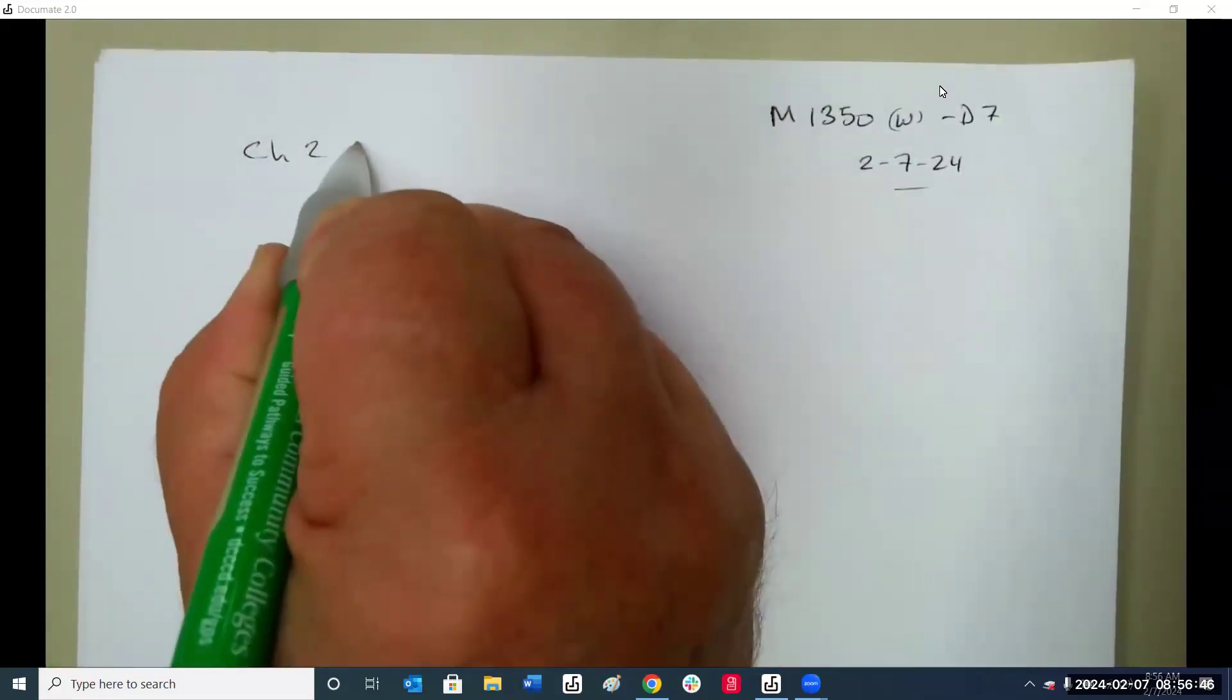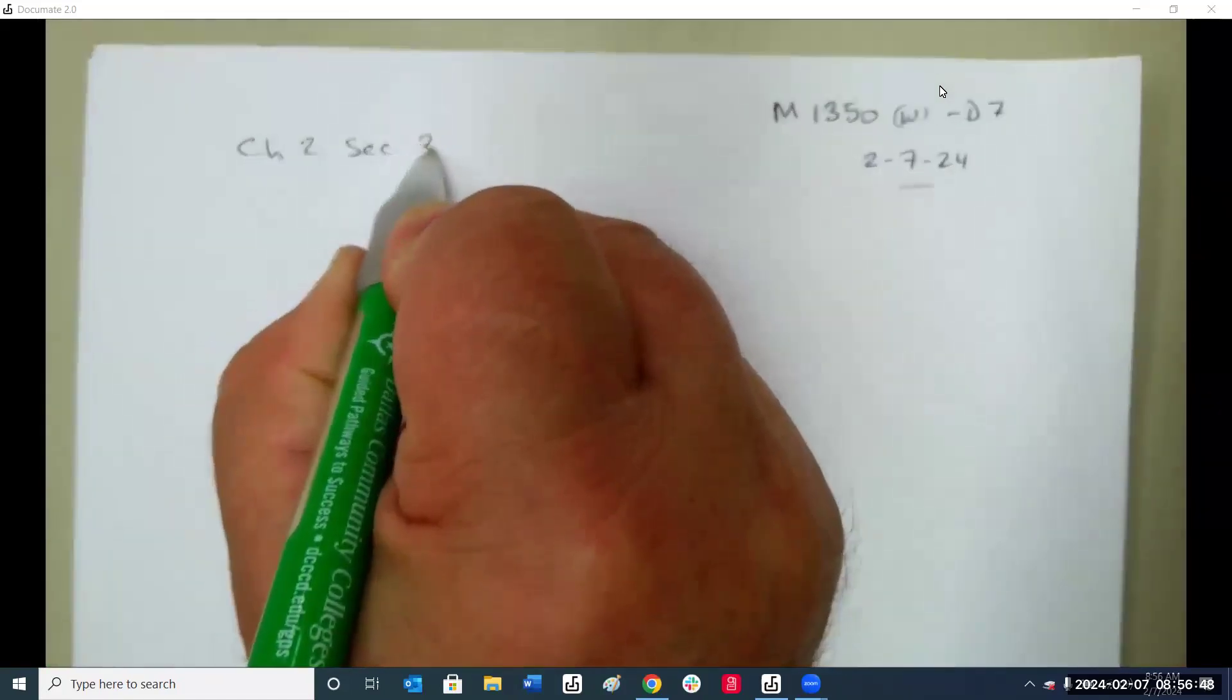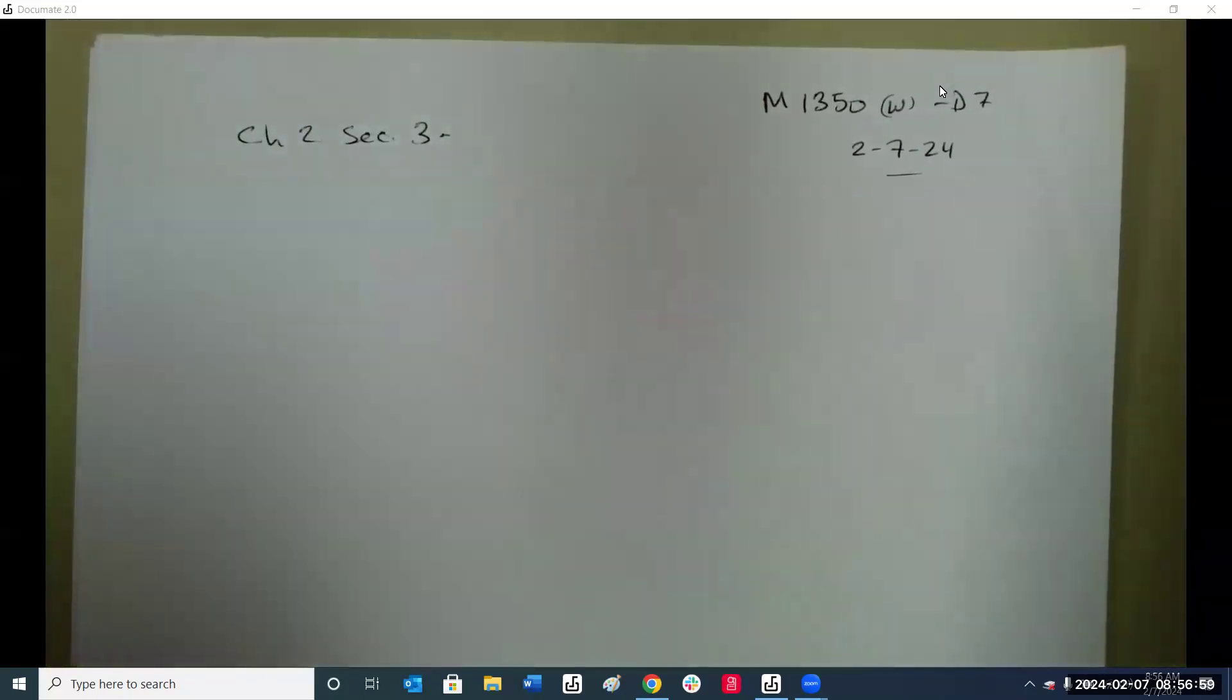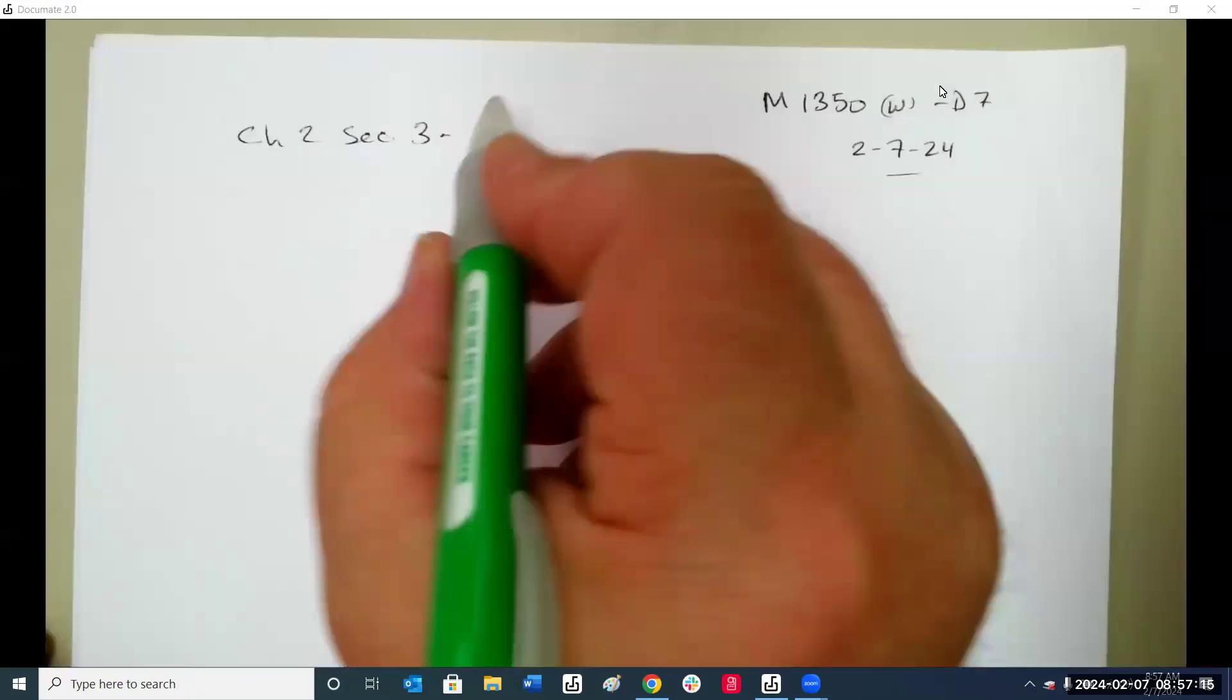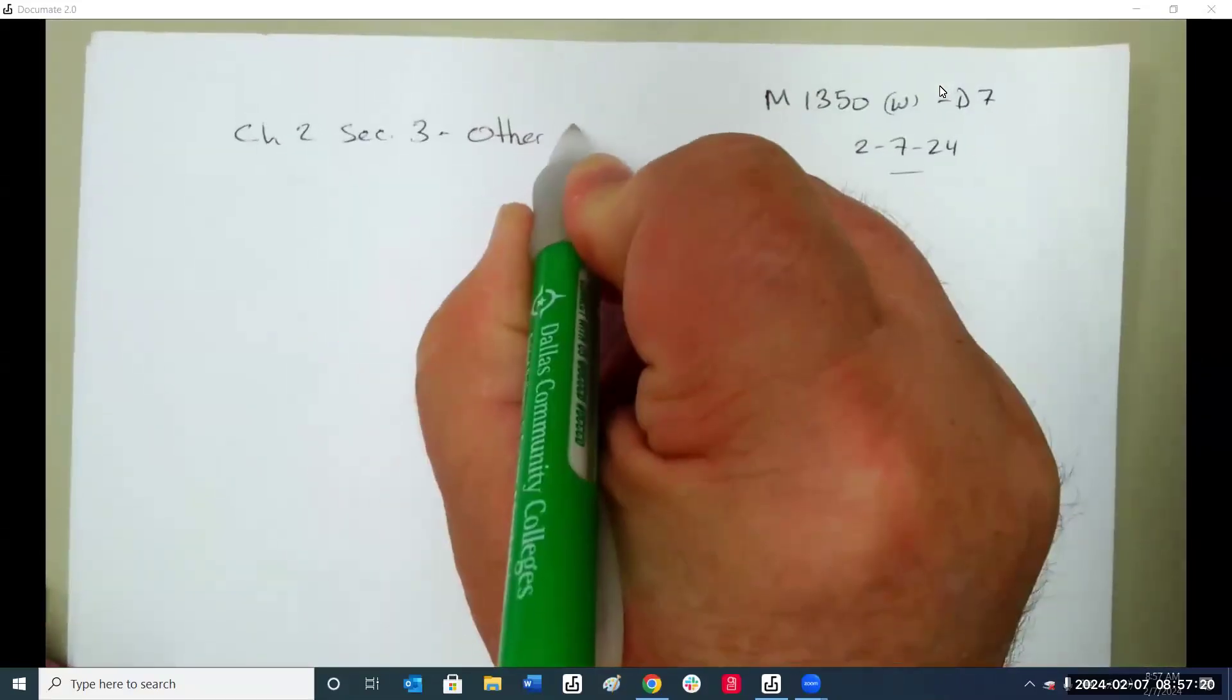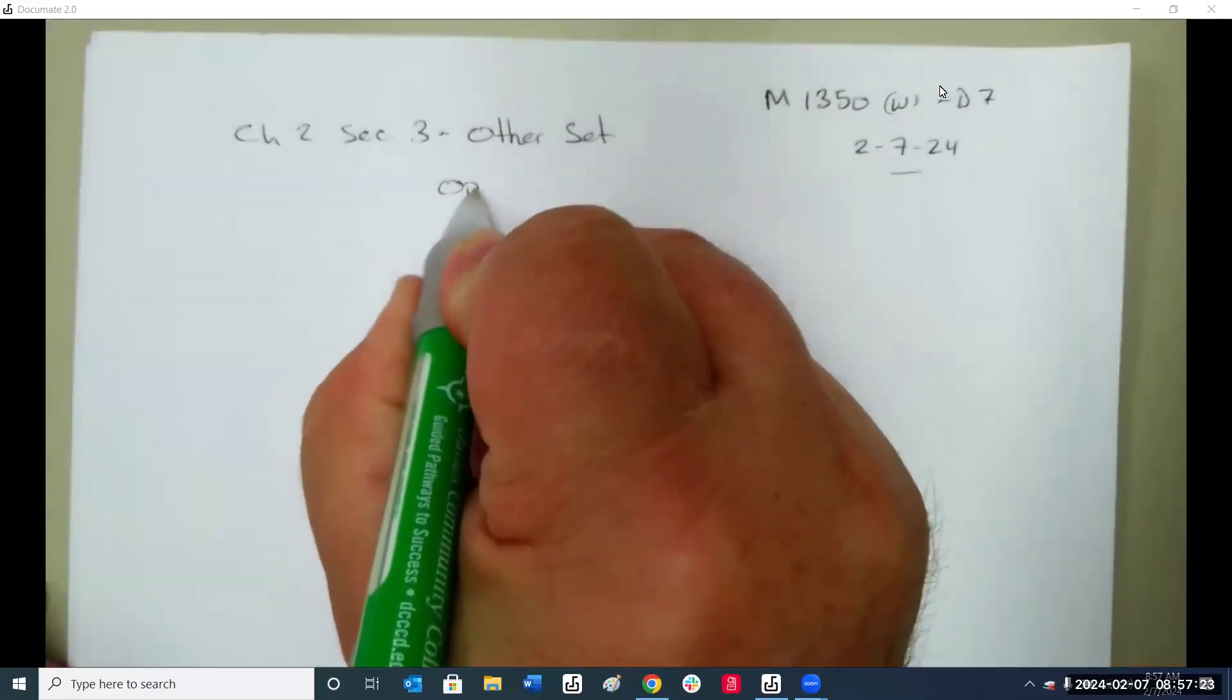Let's look at chapter two, section three. I gave everybody, I have to make one for you. Here I had one extra one. This one deals with other set operations.